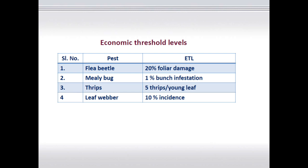Coming to the ETL concept, one needs to understand the economic threshold level before taking up any control measure. For flea beetle, it should be 20% foliar damage. For mealybug, 1% bunch infestation. For thrips, 5 thrips per young leaf. And for leaf webber, 10% incidence is the ETL threshold.